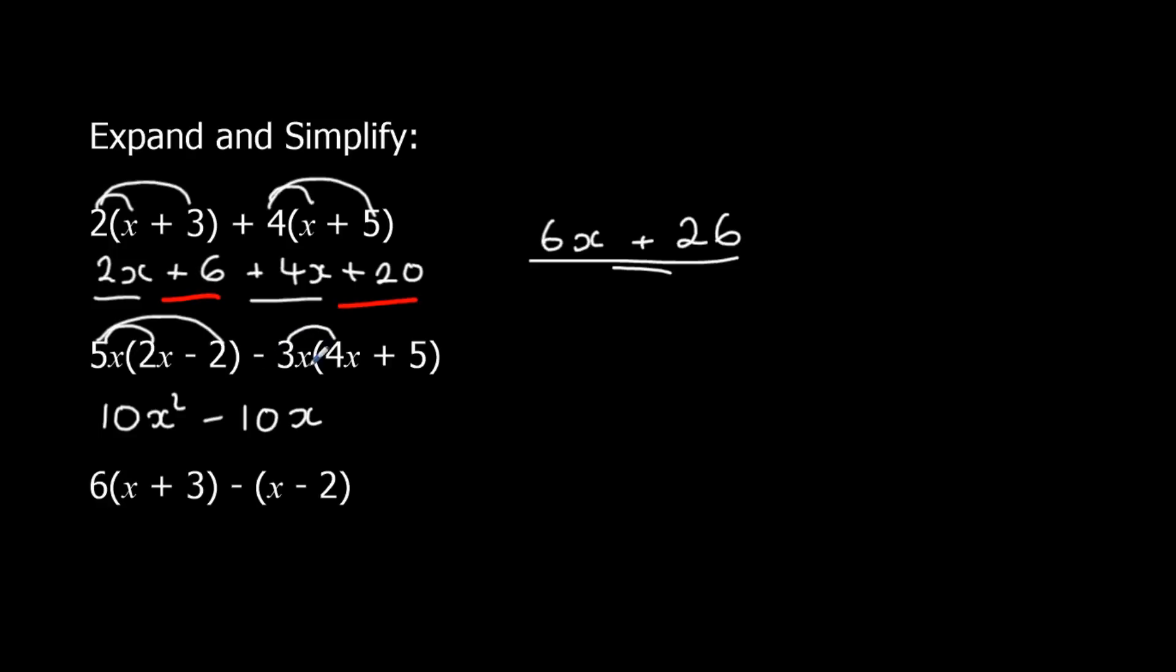This is negative 3x times 4. Negative times a positive. Going to be a negative. 3 times 4 is 12. x times x, x squared. And negative times a positive again. So it's going to be negative. 3x times 5. 3 times 5 is 15.